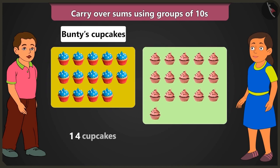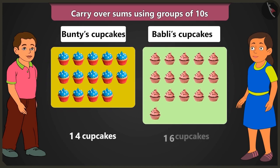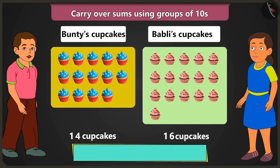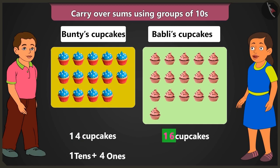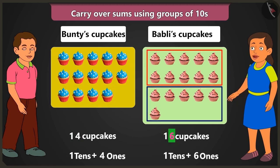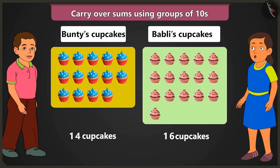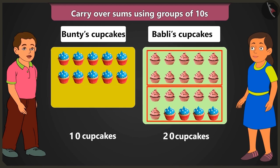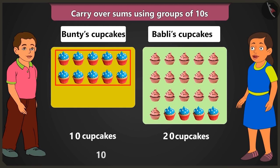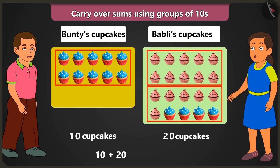Let us see another example. Look, Bubbly! I have 14 cupcakes and you have 16 cupcakes, so how many cupcakes do we have in all? 14 means there is 1 ten and 4 ones cupcakes, and for 16 there is 1 ten and 6 ones cupcakes. If you give me 4 of your cupcakes then you will be left with 1 ten cupcakes, and then adding those will be 2 tens — 20 cupcakes. So your 10 and my 20 will add up to 3 tens, that are 30 cupcakes in total.